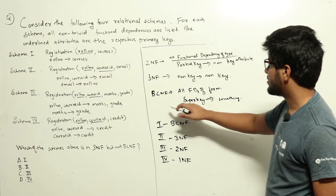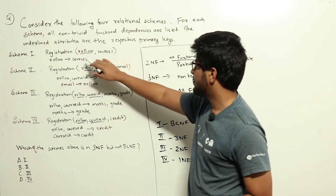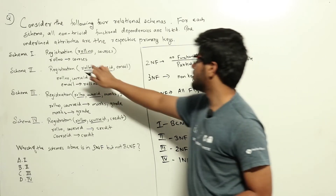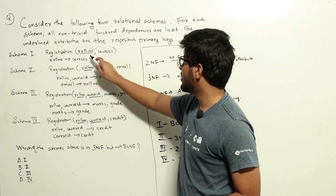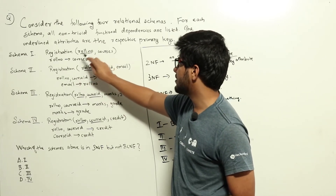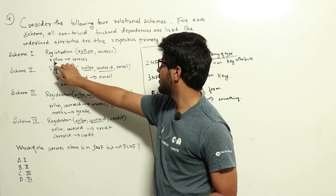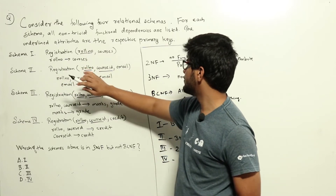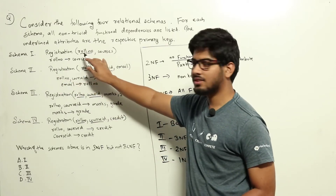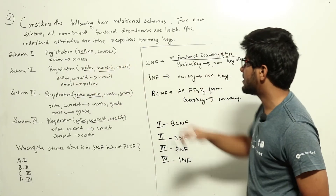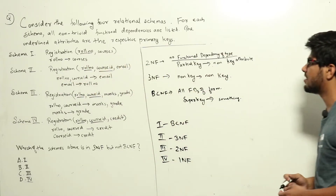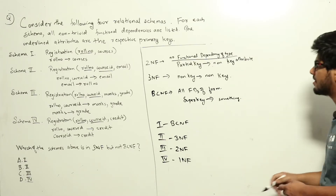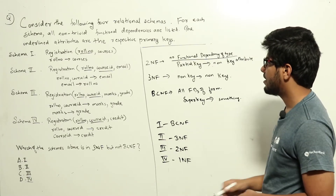Now let's go through each one by one. Schema 1: roll number to courses. Here roll number is the primary key, so it is of the form super key to something else. This satisfies the BCNF property. There is only one functional dependency, so schema 1 is in BCNF.